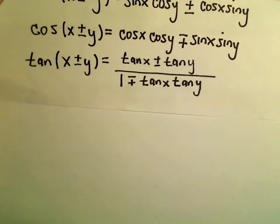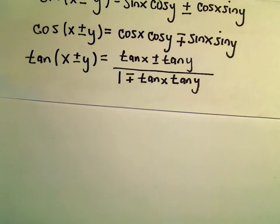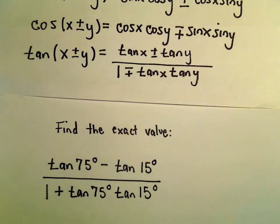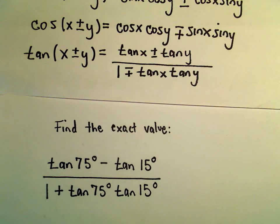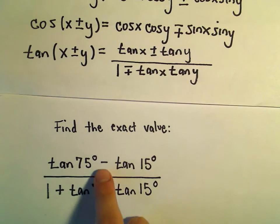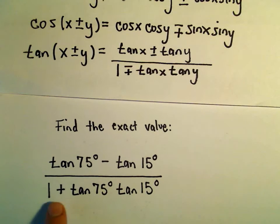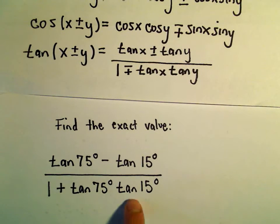Okay, so one last example here using these sum and difference identities. Suppose we want to find the exact value of tangent of 75 degrees minus tangent of 15 degrees divided by 1 plus tangent of 75 degrees times tangent of 15 degrees.